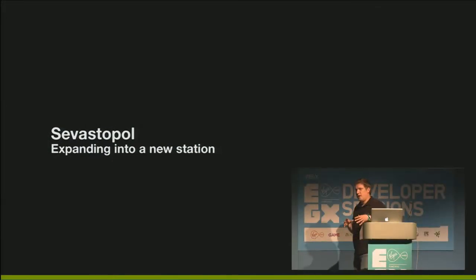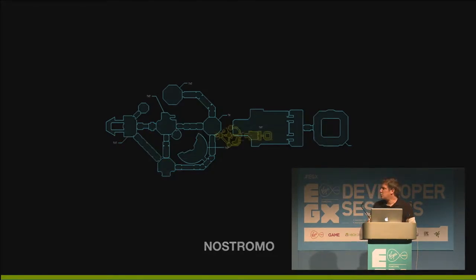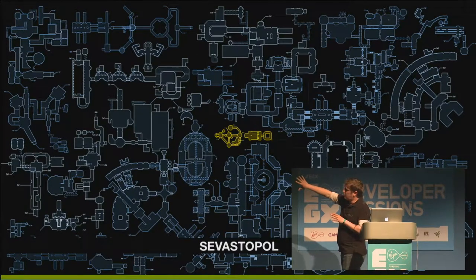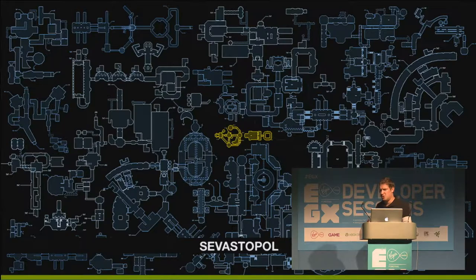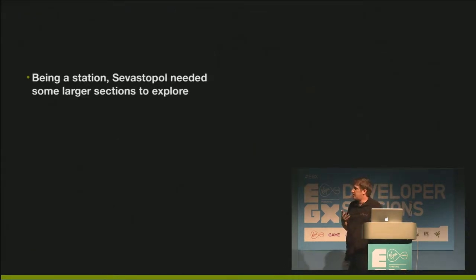Moving on from the Nostromo to building a bigger world - building the Sevastopol. The Nostromo is roughly this square footage in what we see in the film, and there's not much more to the Nostromo layout than this. But we had much more to create for Sevastopol - and this is just some of it, there's a lot more. We had a big challenge because you can't just stick to the same shapes - you can't stick to the exact same layout of the Nostromo and do that for a full game campaign. We had to vary those spaces and create much larger rooms to explore, layered sections that you wouldn't normally see. Being a space station rather than a ship, there needed to be larger sections - it couldn't all be corridors.